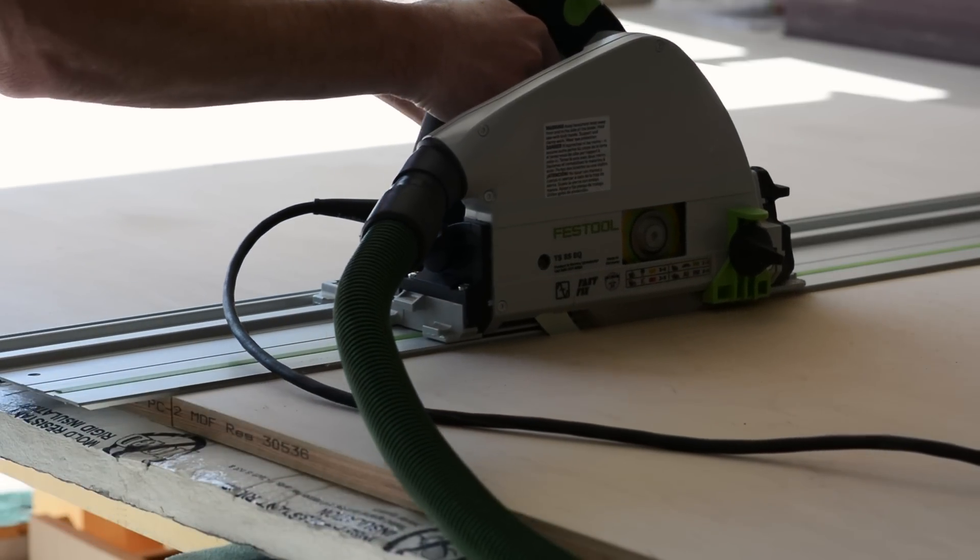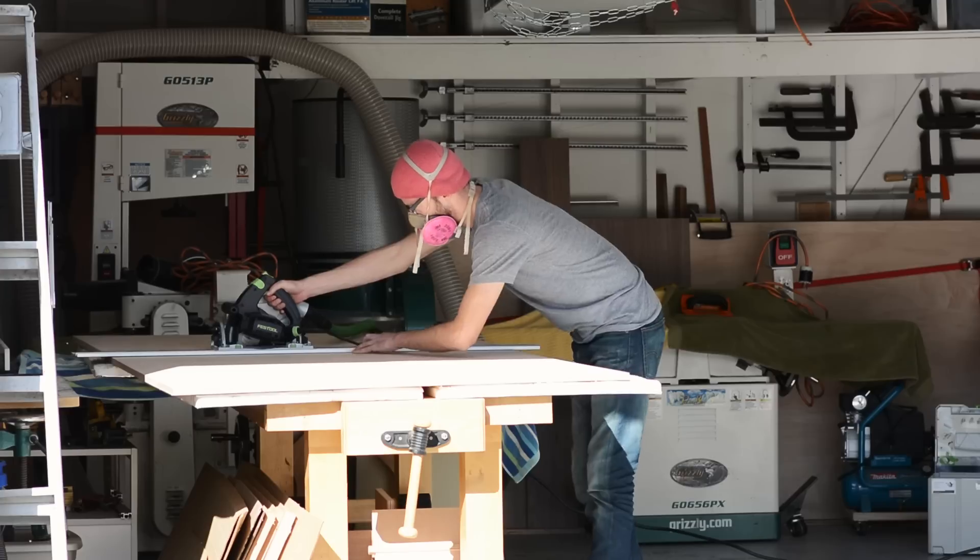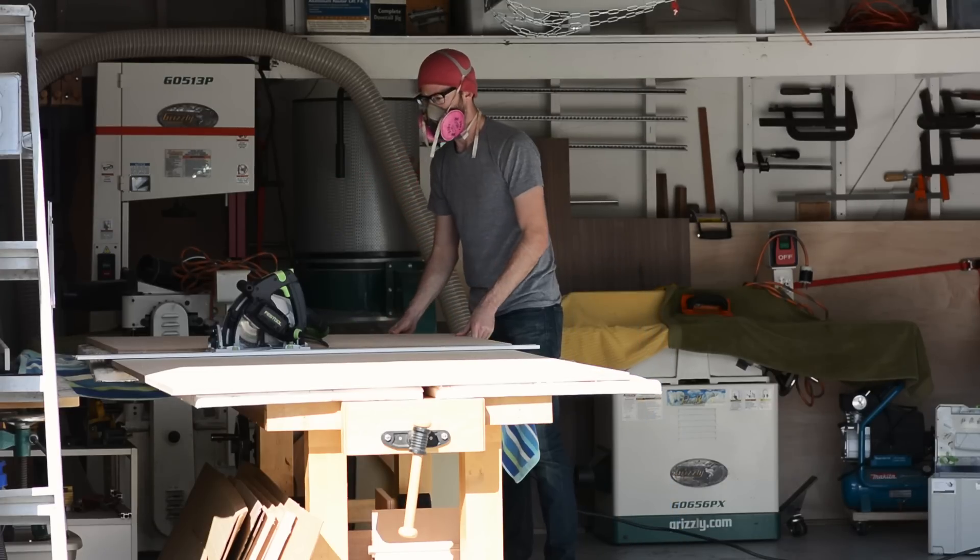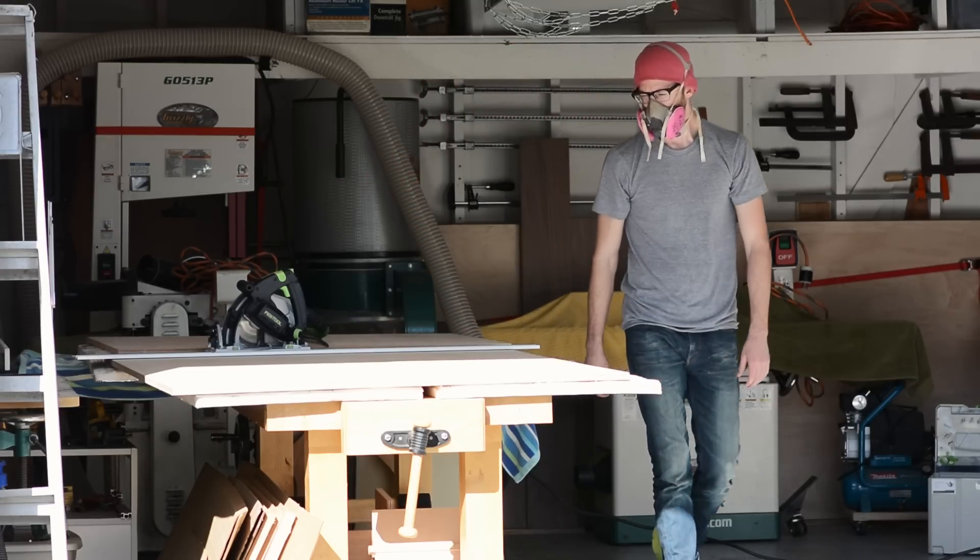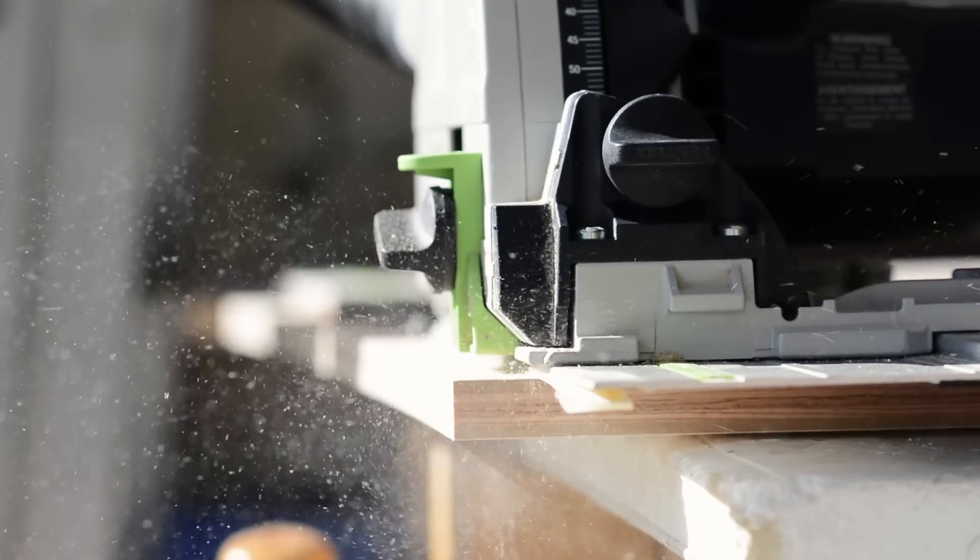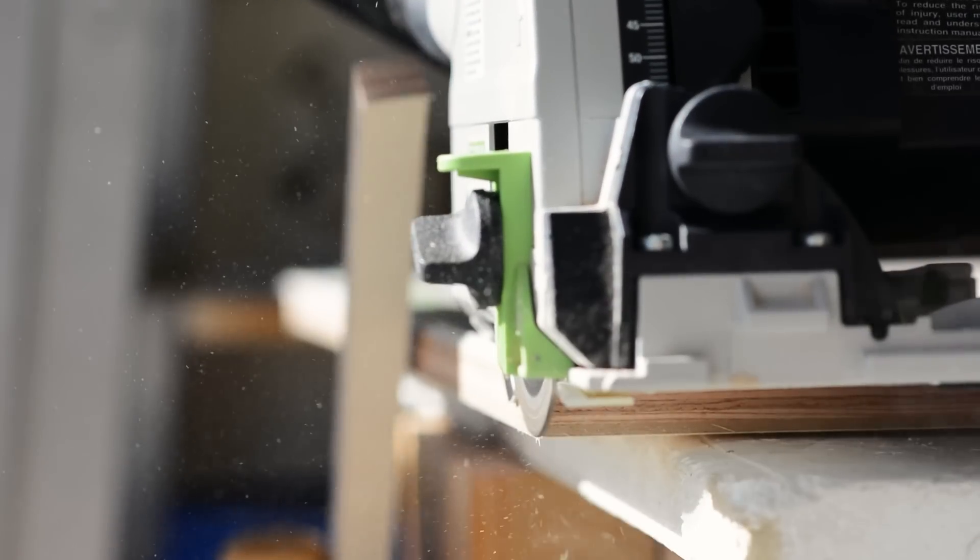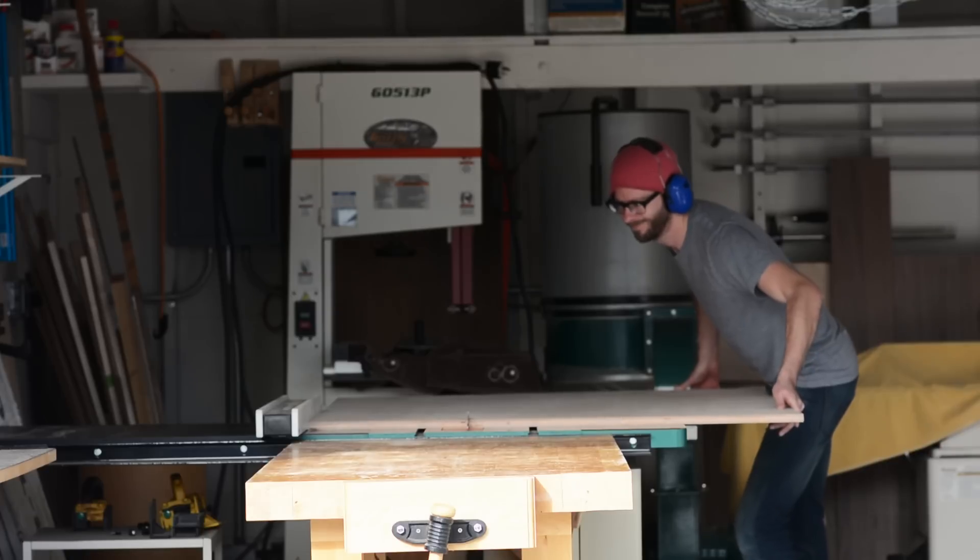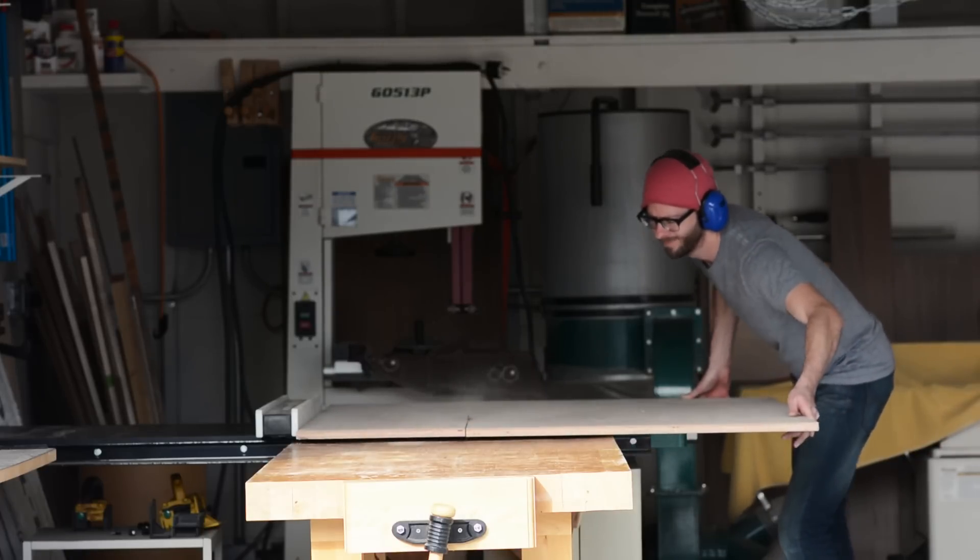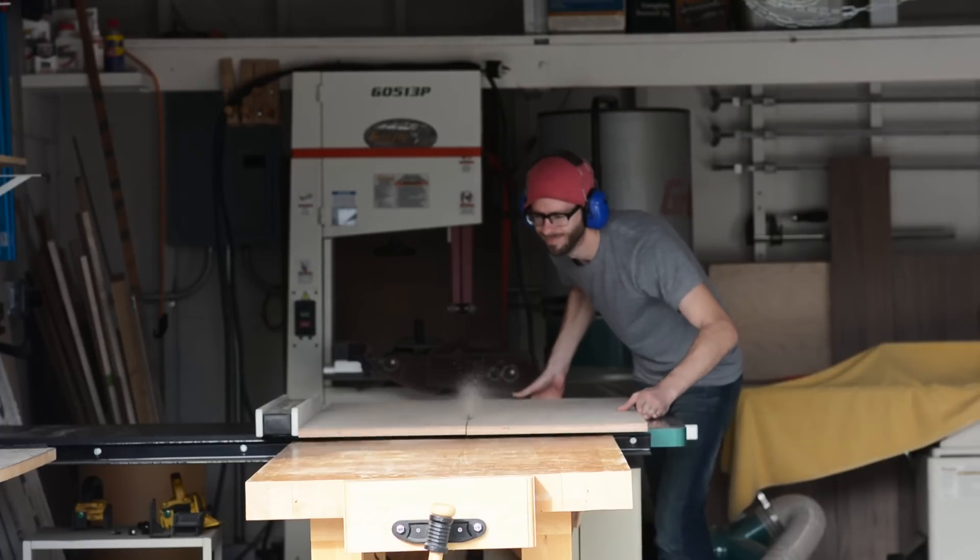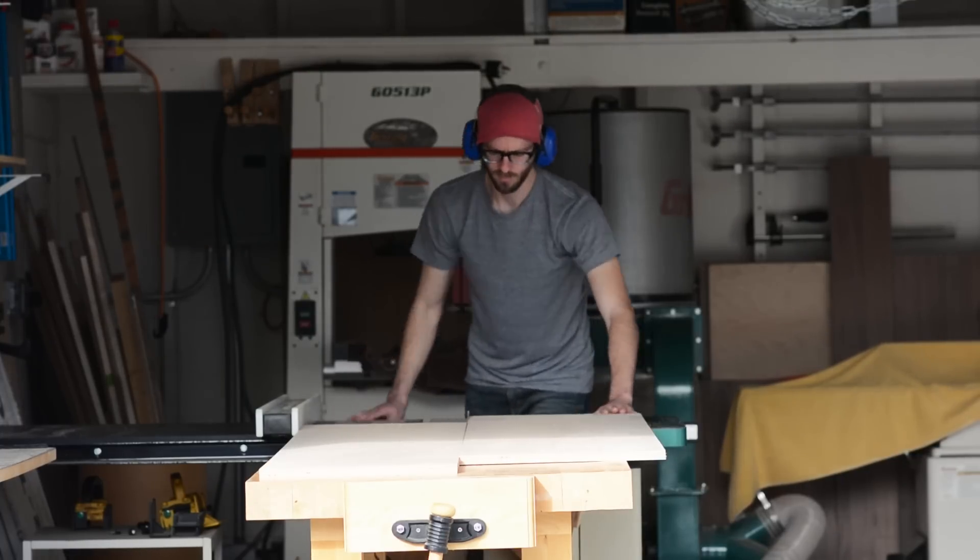I started off by cutting the four shelves which are made out of maple plywood. There really isn't anything too fancy going on here. I pretty much just cross cut the sheet of plywood at 61 inches and then took another inch off the opposite end so that I wound up with a 60 inch piece that was clean on both sides. Next, I ripped the pieces to about 15 and a quarter inches and then took one last pass at 15 inches to get the shelves down to their final dimension.